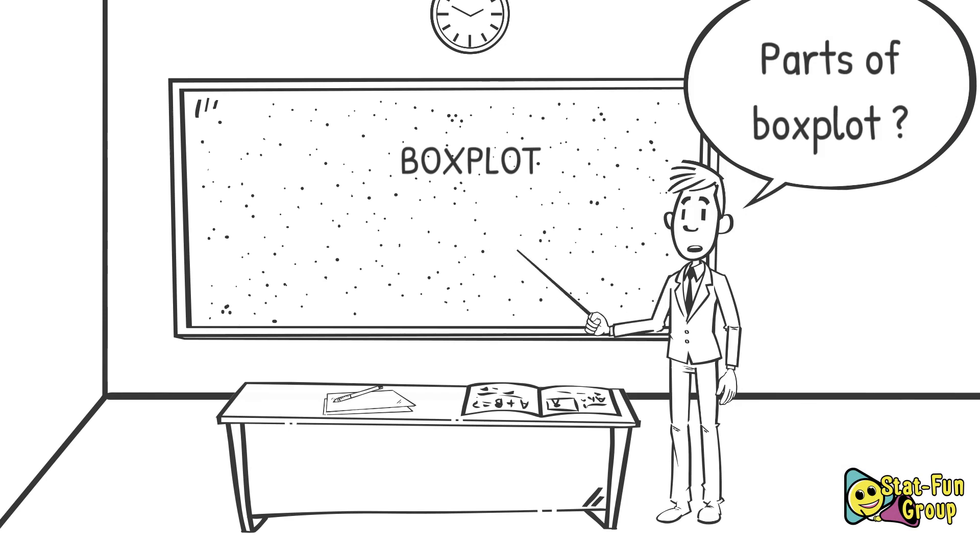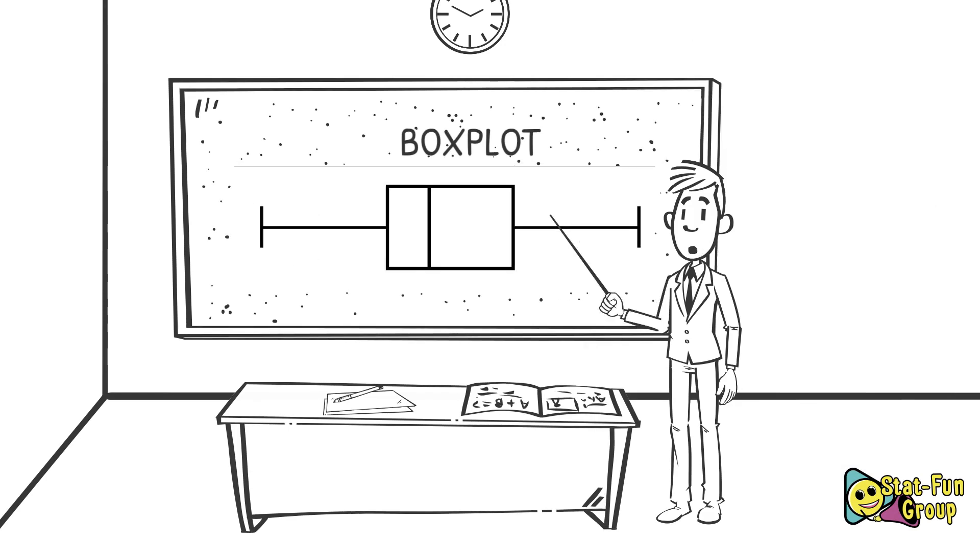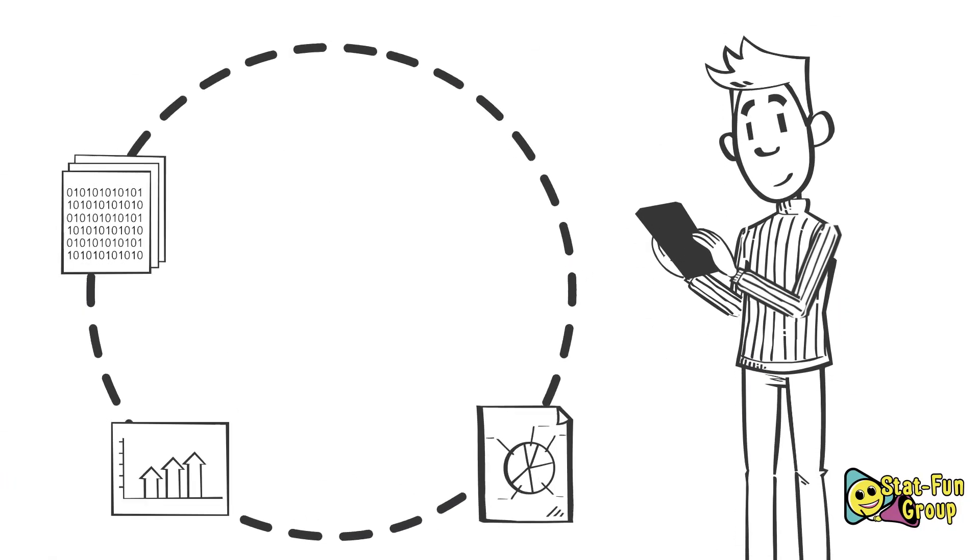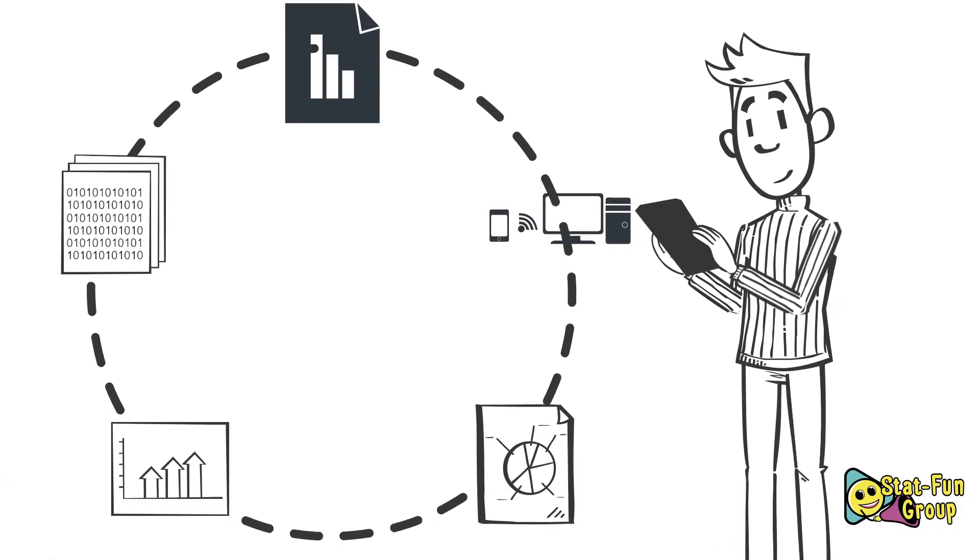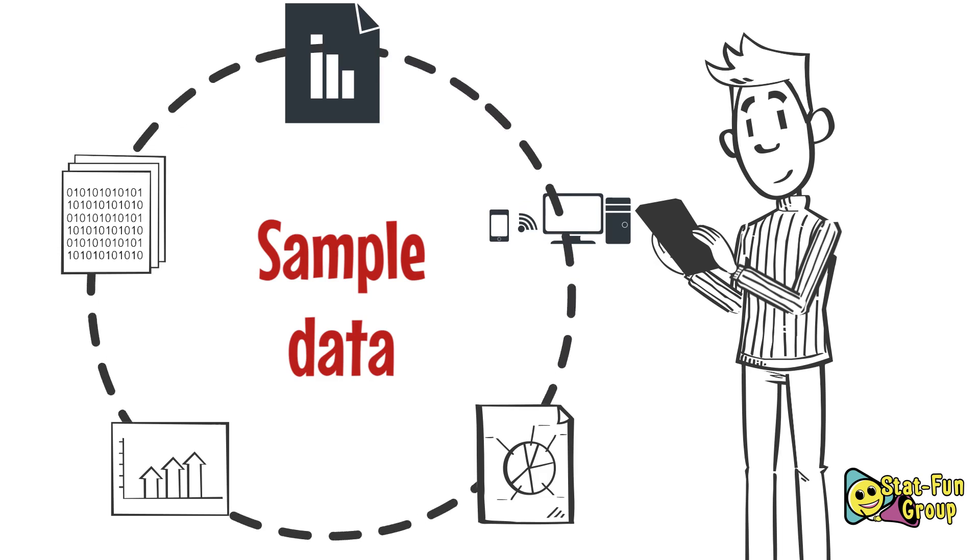A boxplot is simply a rectangular box with two whiskers as in the illustration. Consider a situation where we have a number of sample data available and we're going to construct a boxplot using collected samples.